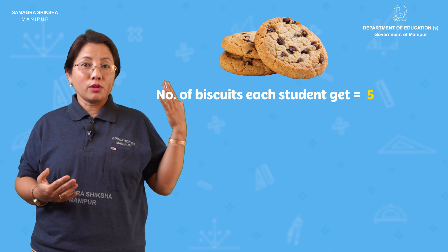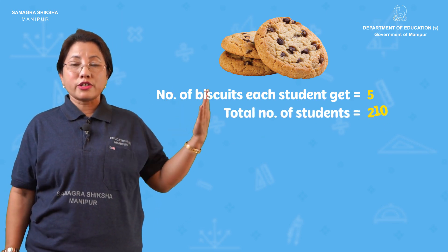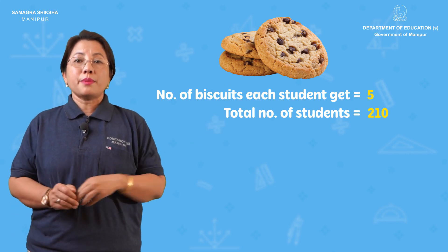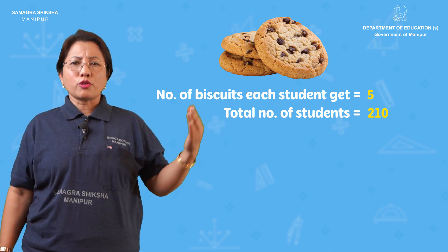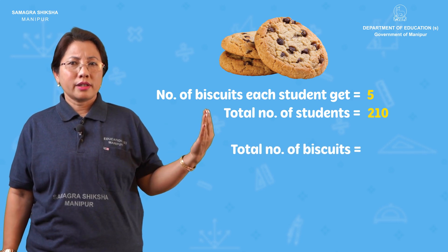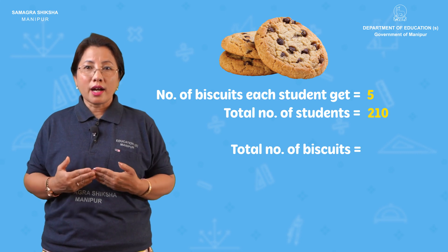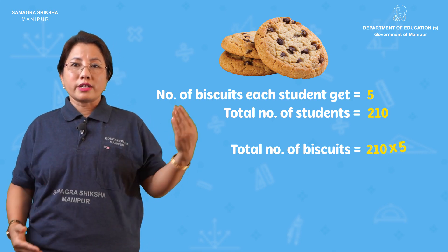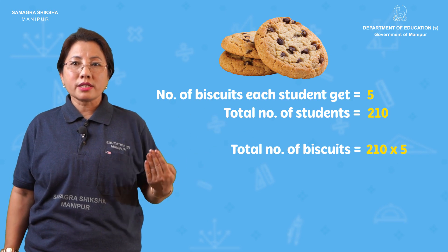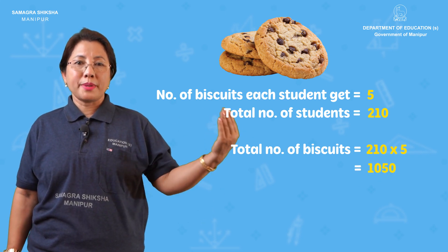What is the student number? There are 210 students. What is the total biscuit number? It is multiplied by the total: 210 multiplied by 5. That is 1050 biscuits.